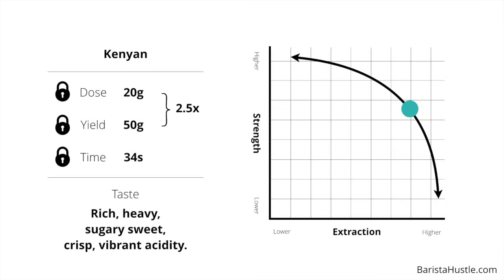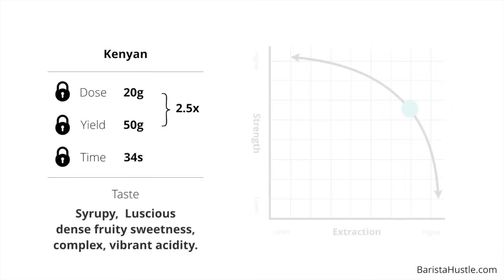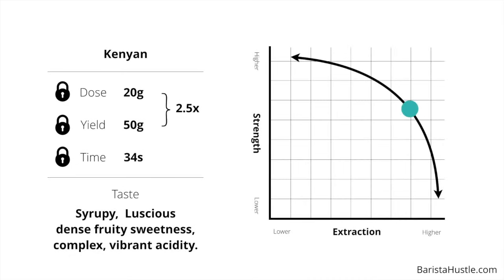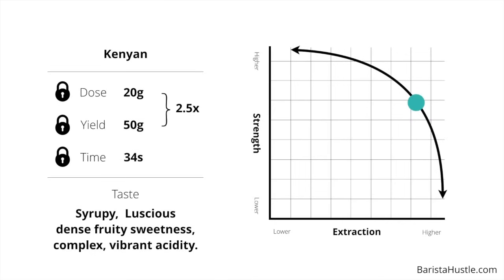It also turns out we've been using an imaginary curved tamper. Curved tampers are silly and reduce extraction evenness, so let's swap that out for a perfectly flat one. The espresso becomes super syrupy, sugary, fruity and round. The acidity is vibrant and complex — this is even better than the bag said it would be. Extraction and strength both went upwards again because we improved the evenness of our extraction. This is easily the best espresso thus far: syrupy, luscious, dense, complex and with vibrant acidity.